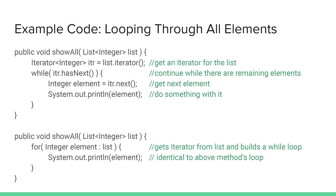The while loop continues to iterate as long as the iterator's hasNext is returning true — as long as there are elements the iterator hasn't shown us yet, that while loop will repeat. The first line in the while loop gets the next element from the iterator and advances the iterator to the next position, making progress through the list. iter.next is returning our next element, which is an integer, and we're printing it out. So this loop will repeat for each element in the list and print out each one.